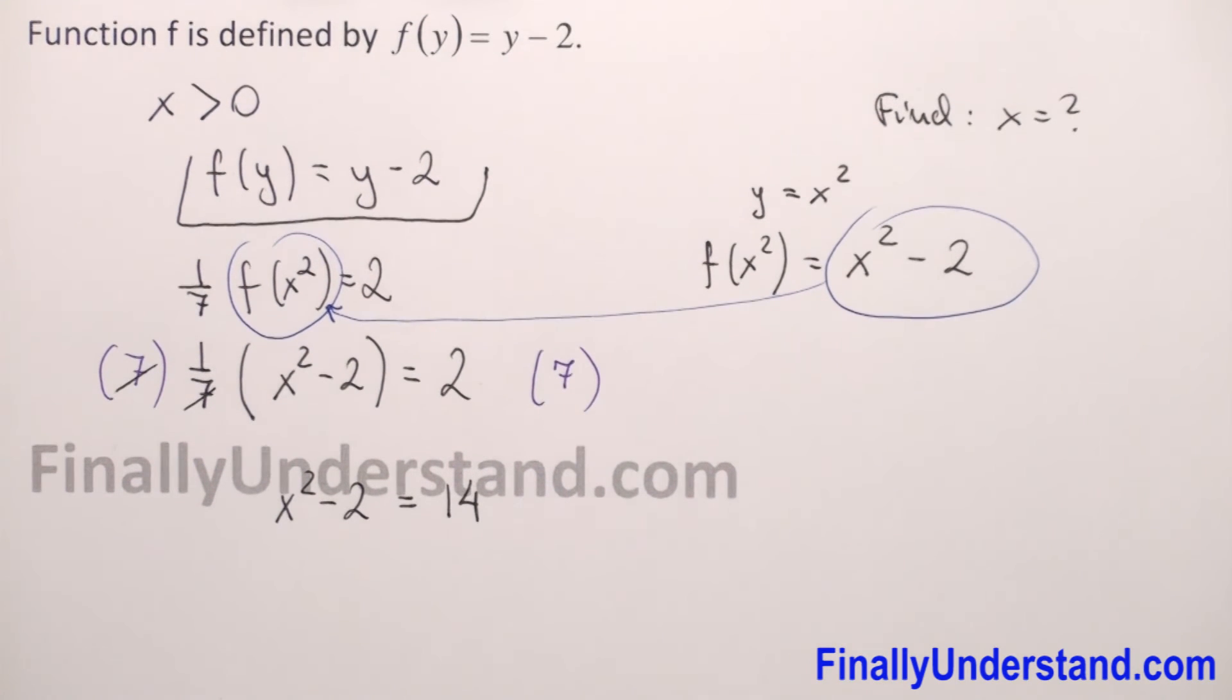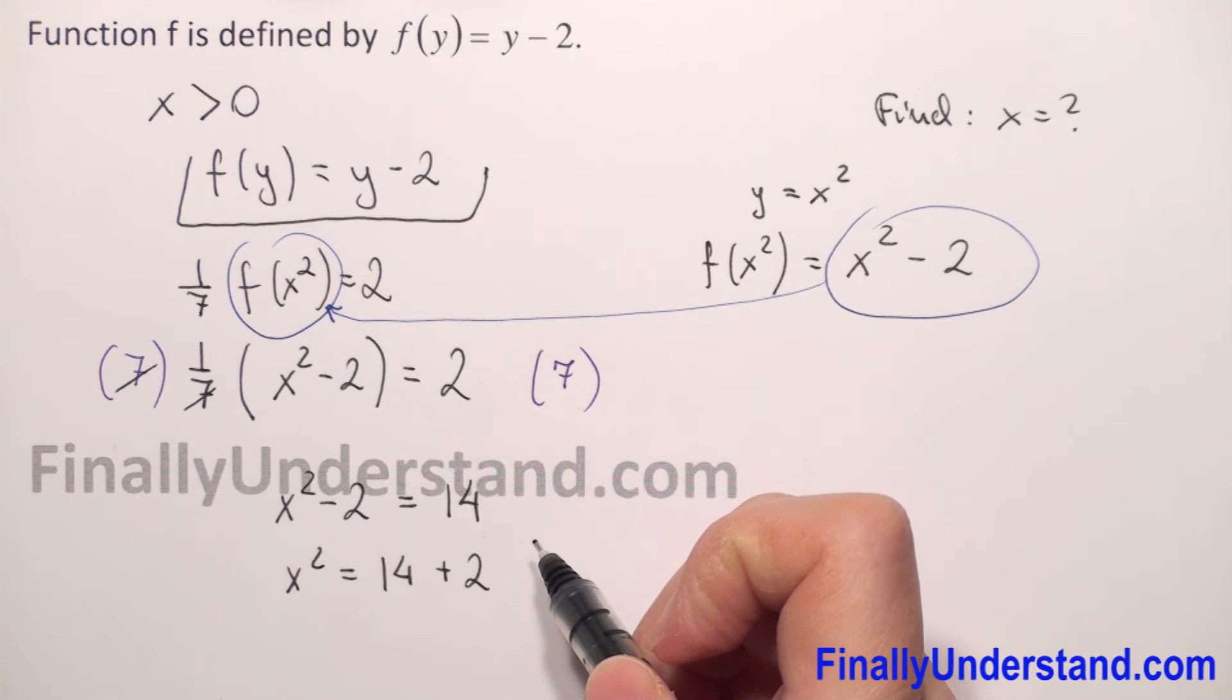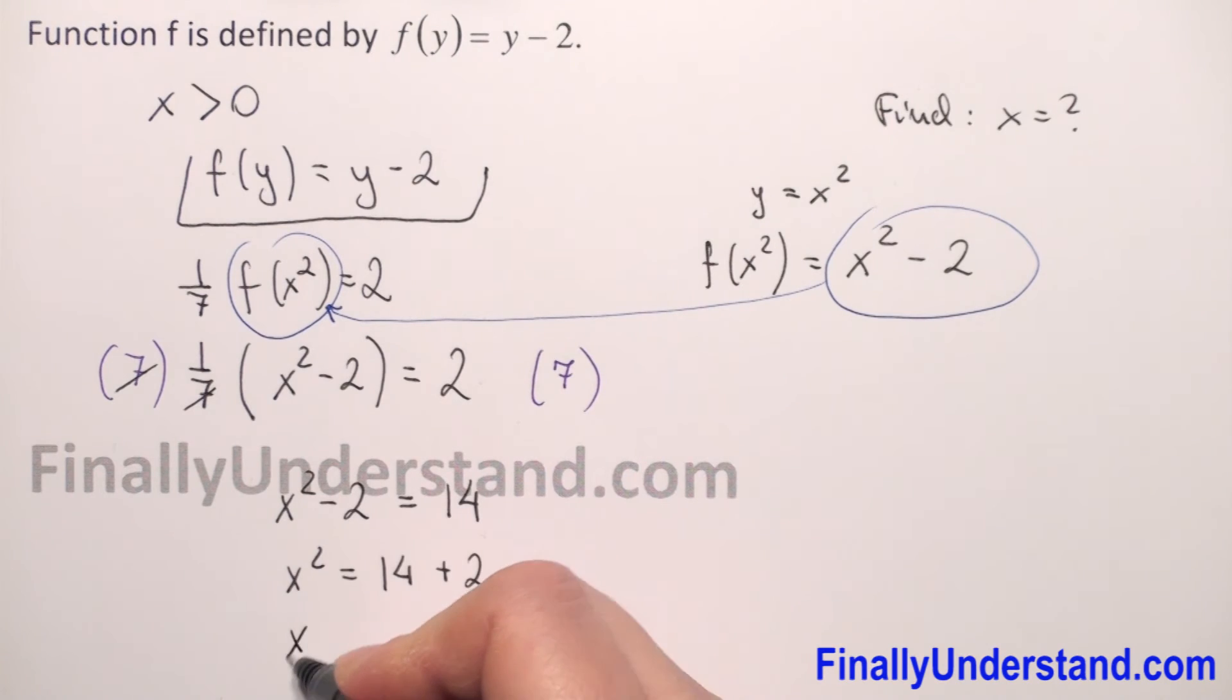Now I will move negative 2 to the right side. So we have x squared plus will be 2 because when we move negative number to opposite side we have to change the sign so it will be positive 2. And we have that x squared equals 16.